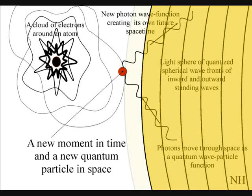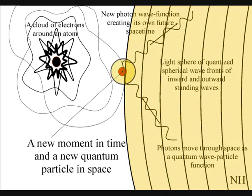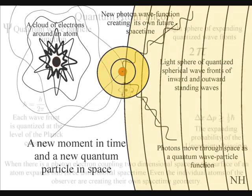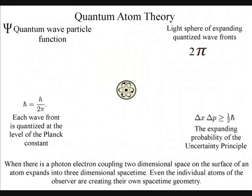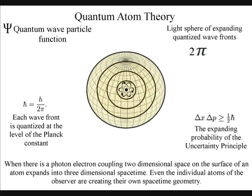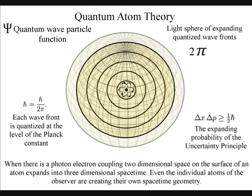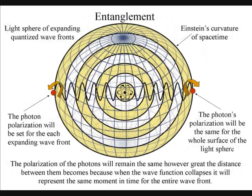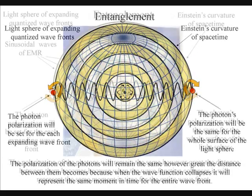This is because the process of time is created by photon-electron couplings that expand. As a quantum wave particle function has an inverse volume of space in the form of light spheres of quantized wave fronts, creating the forward motion of time. Therefore time has the symmetry and geometry of space-time, and it is this symmetry that creates entanglement.